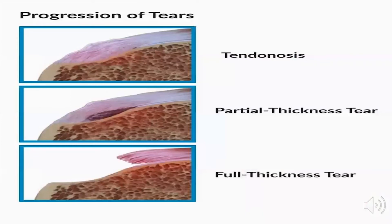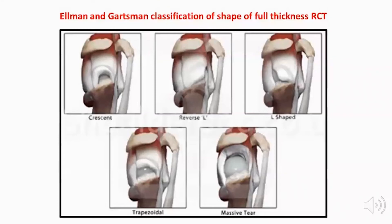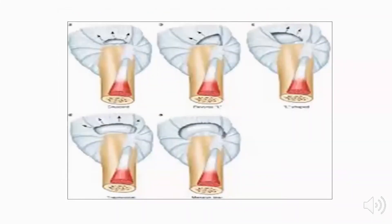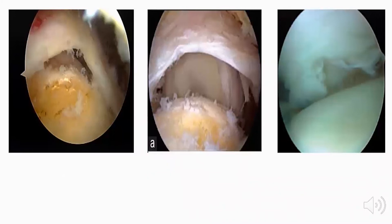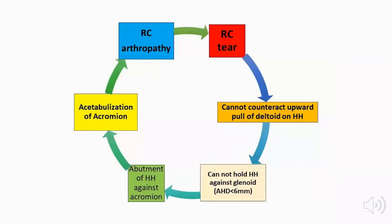The progression of tears starts with tendinosis, then extends into a partial thickness tear, and then a full thickness tear. Habermeyer had a topographic classification dividing the rotator cuff into an anterior zone by the subscapularis, a superior zone by the supraspinatus, and a posterior zone by the infraspinatus and teres minor. The Ellman and Gartsman classification categorizes tears by shape: crescent, reverse-L, L-shaped, trapezoidal, or massive tear. Arthroscopic views demonstrate the different tear types and sizes.